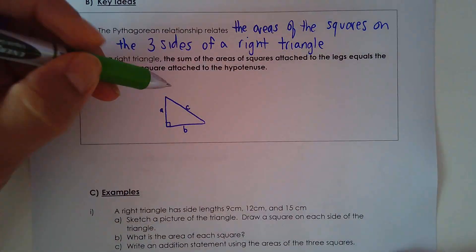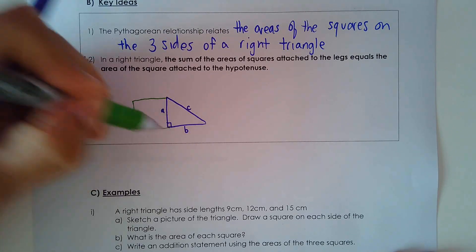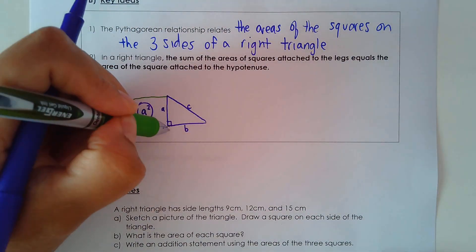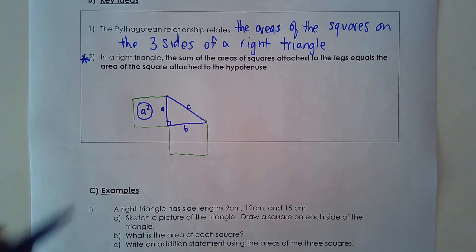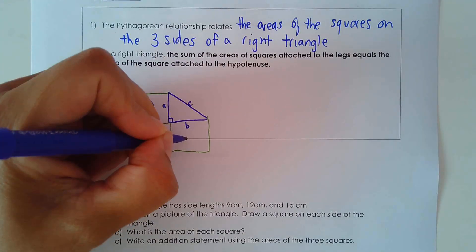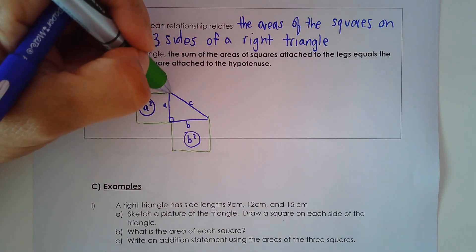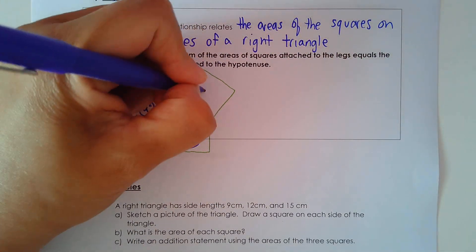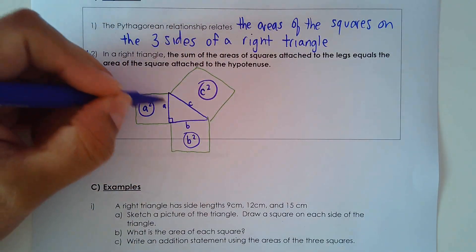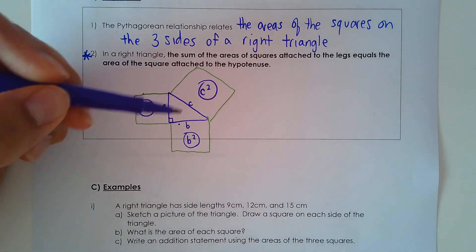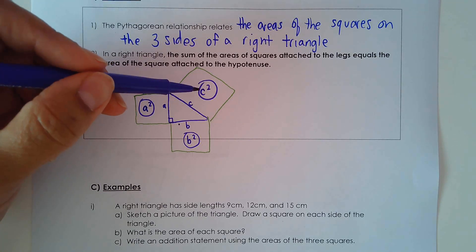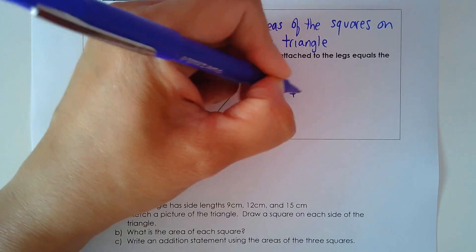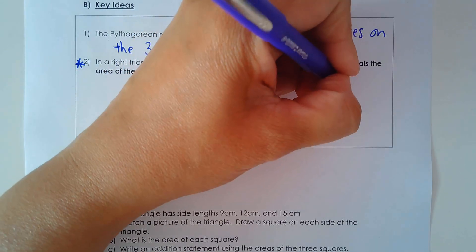We can call this side C. If we find the area of side A, it would be A times A, or A squared. If we calculate the area of side B, it would be B times B, or B squared. And if we calculate the area of side C, it would be C times C, or C squared. The squares attached to the legs — A squared plus B squared — equals the area of the square attached to the hypotenuse. So A squared plus B squared equals C squared.